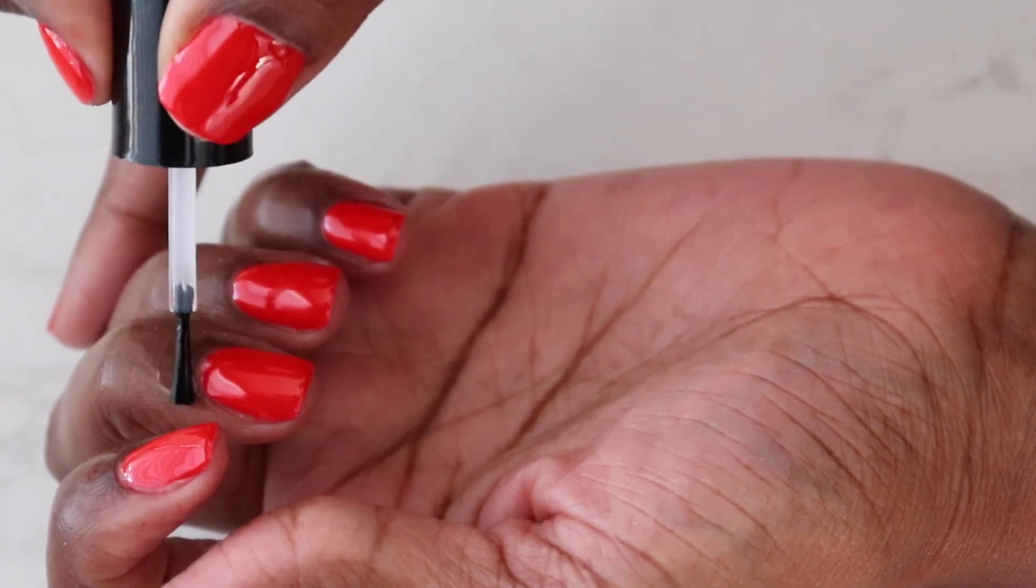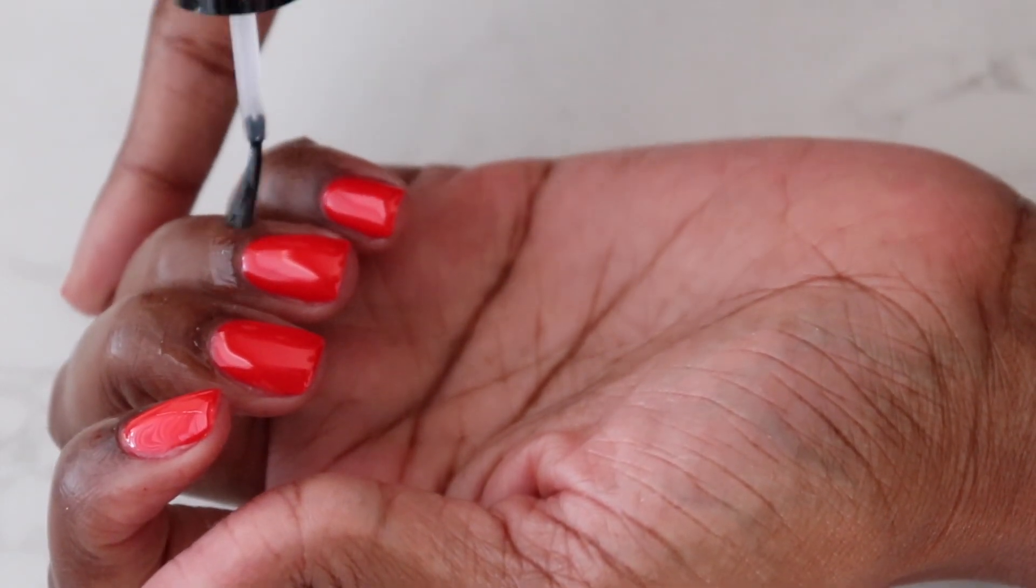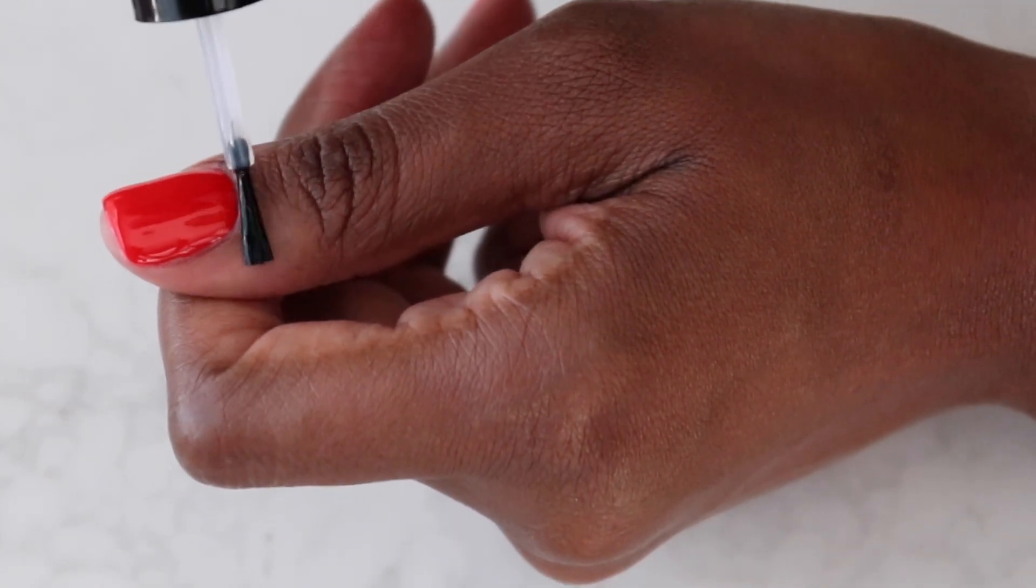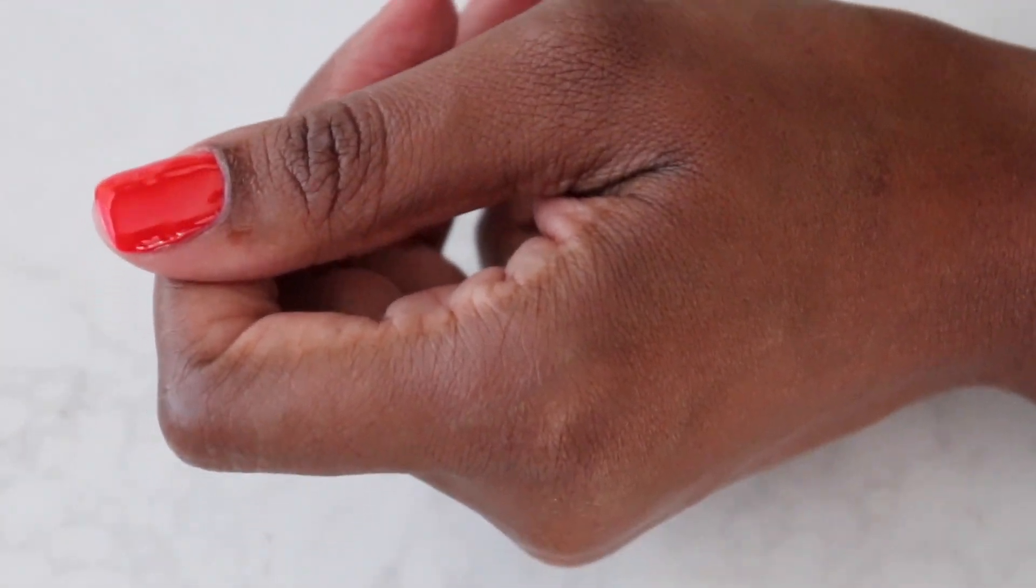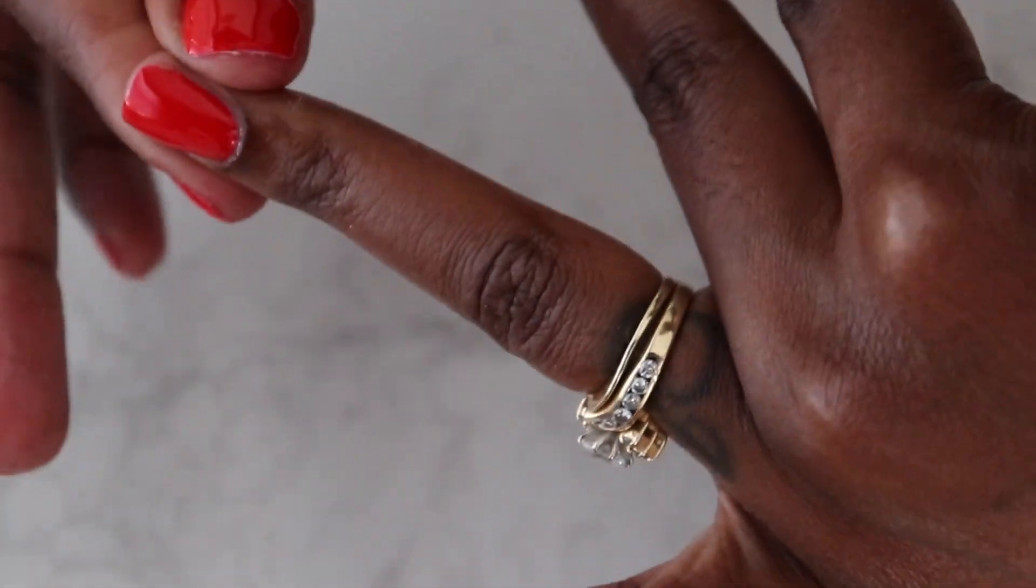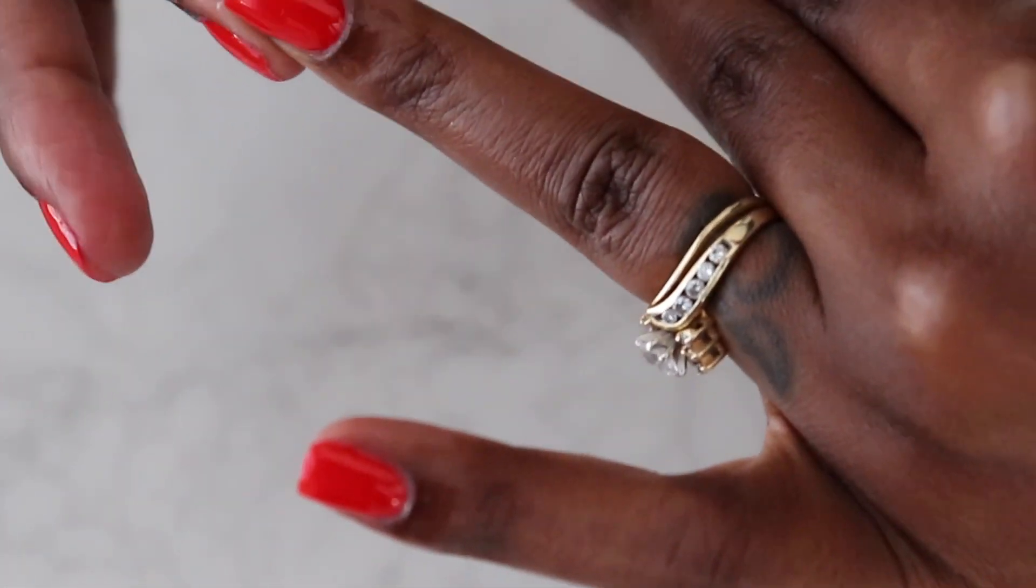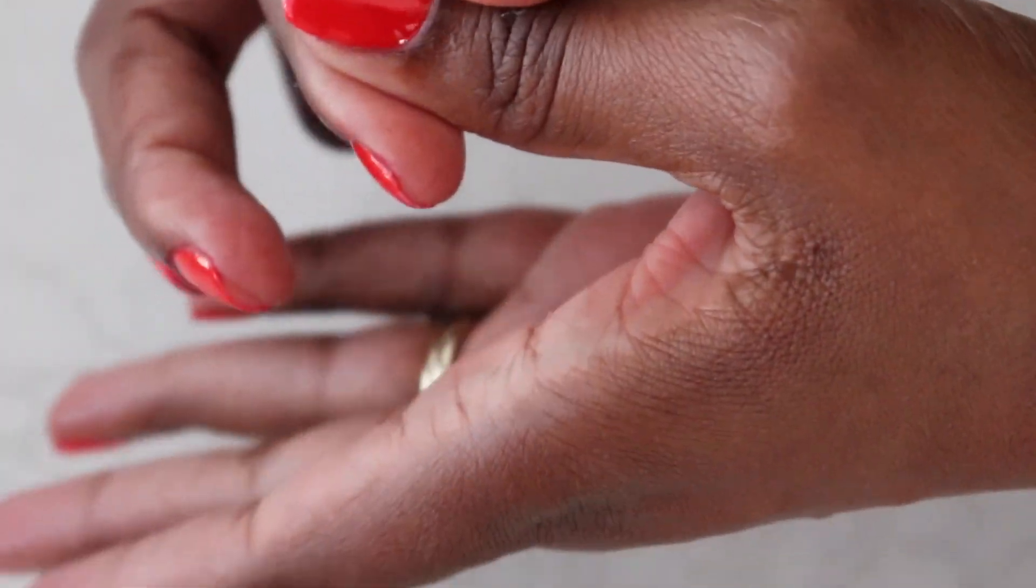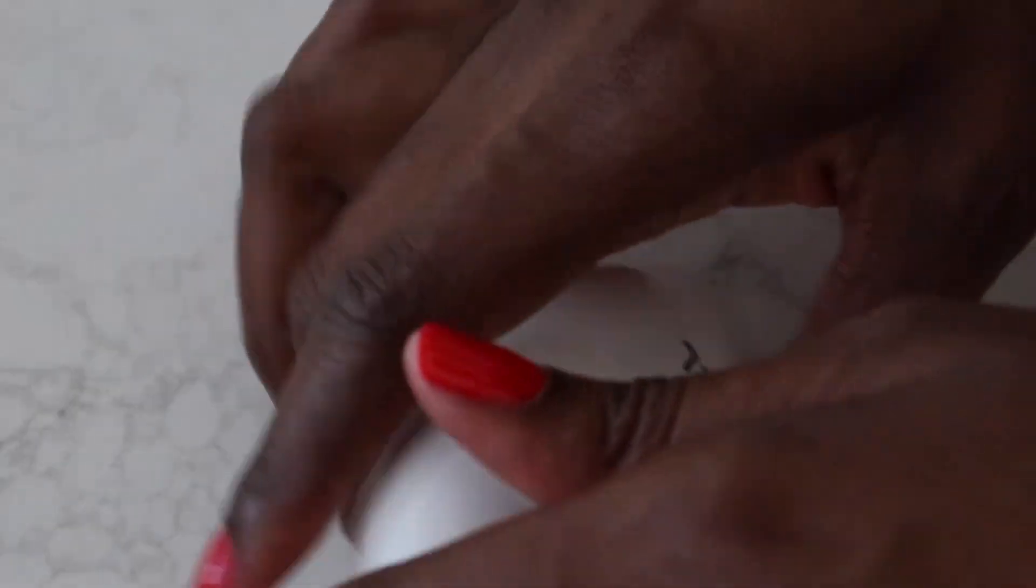So go ahead and add your cuticle oil. You can't skip this step. This step is illegal to skip. If you're dealing with me, this step is illegal to skip. Moisturize the skin around your nails. Moisturize your cuticles. This helps your nails to grow. It helps to keep your nails strong. And who wants to be walking around with ashy cuticles anyways? Like, you're a lady, act like it.